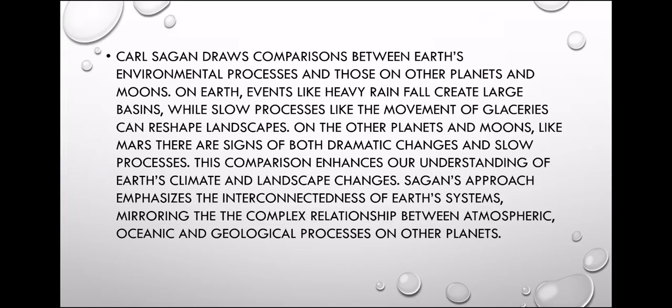This is a paragraph question. Carl Sagan draws a comparison between Earth's environmental processes and those on other planets and moons. On Earth, events like heavy rainfall create large basins, while slow processes like the movement of glaciers also shape the landscape. On Mars, there are signs of both dramatic changes and slow processes. This comparison enhances our understanding of Earth's climate and landscape changes. Sagan's approach emphasizes the interconnectedness of Earth's systems, comparing the complex relationship between atmospheric, oceanic, and geological processes on other planets.